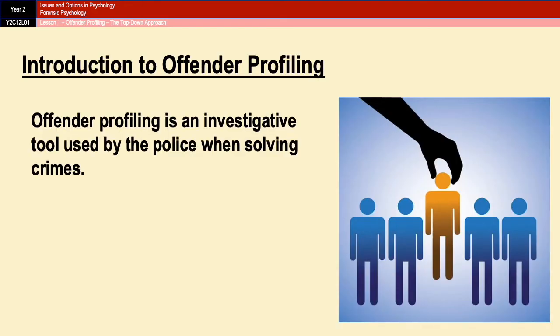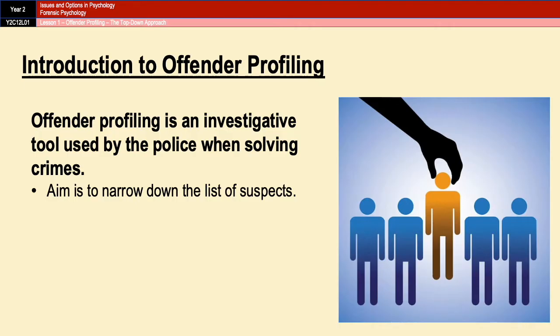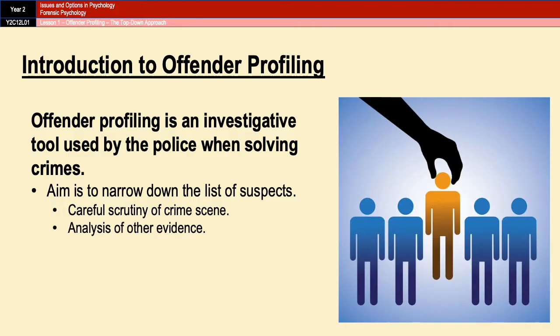Offender profiling is a tool employed by the police when solving crimes. The main aim is to narrow down the field of inquiry and the list of likely suspects. It's based on the idea that characteristics of an offender can be deduced from the characteristics of the crime and the particulars of the crime scene. The compiling of a profile usually involves careful scrutiny of the crime scene and analysis of the evidence, including witness reports, in order to generate a hypothesis about the probable characteristics of the offender.